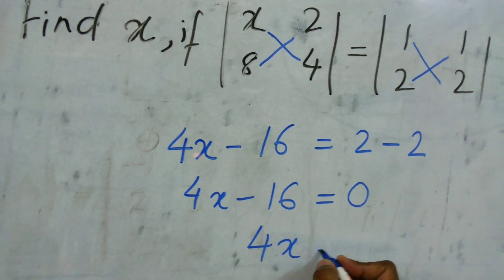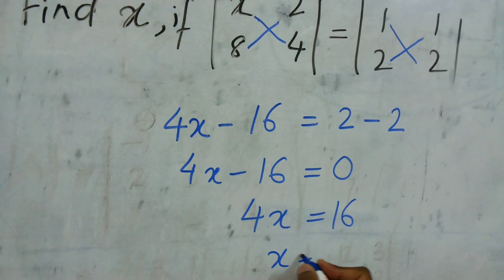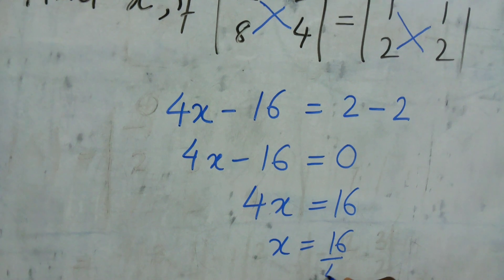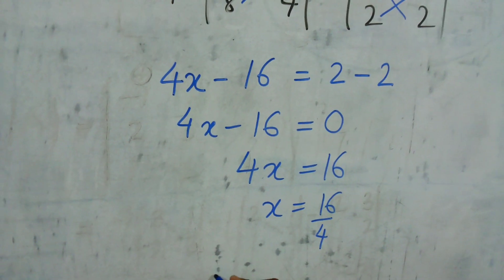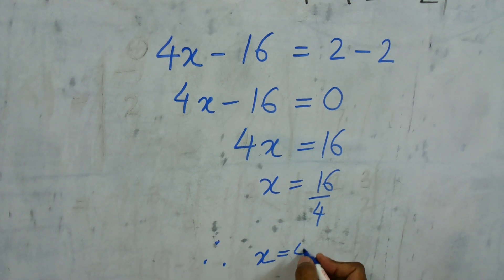So this will be 4x is equal to 16 which will be x is equal to 16 divided by 4. Therefore, x is equal to 4.